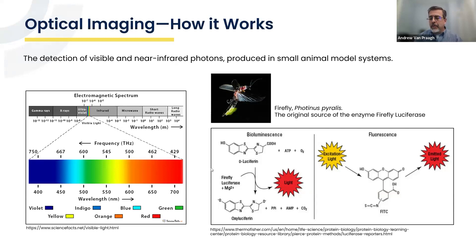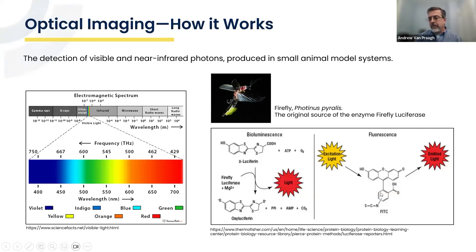We will use bioluminescence, which requires an intracellular enzyme — a luciferase — to generate light in the presence of its substrate. In the case of Firefly luciferase, you will use D-luciferin, with cellular ATP and oxygen as required elements for the production of light. Fluorescence is the other major imaging modality within optical imaging, making use of fluorophore molecules whose electrons go into an excited state after being exposed to excitation light. We're going to focus exclusively today on bioluminescence.